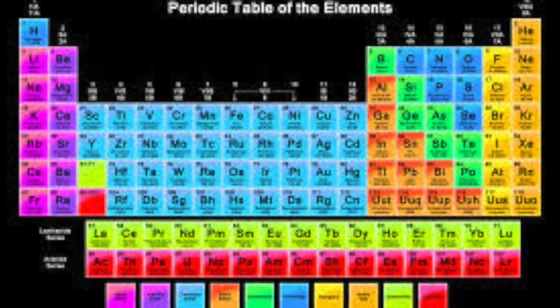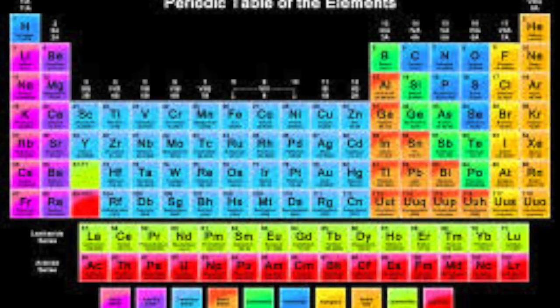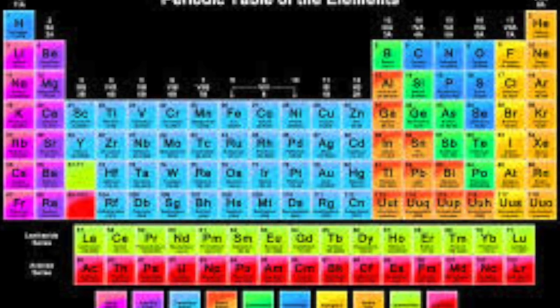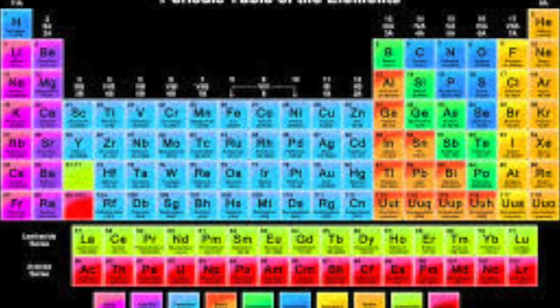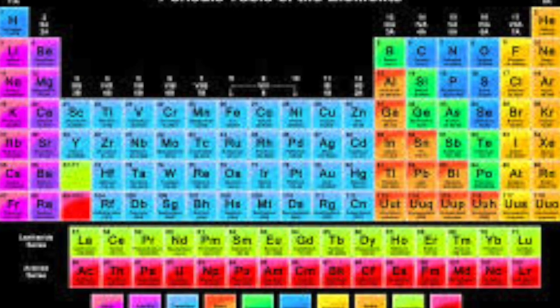All 118 elements are organized in the chart called the Periodic Table of Elements. The atomic number is calculated by adding the number of protons an atom has to the number of neutrons an atom has.